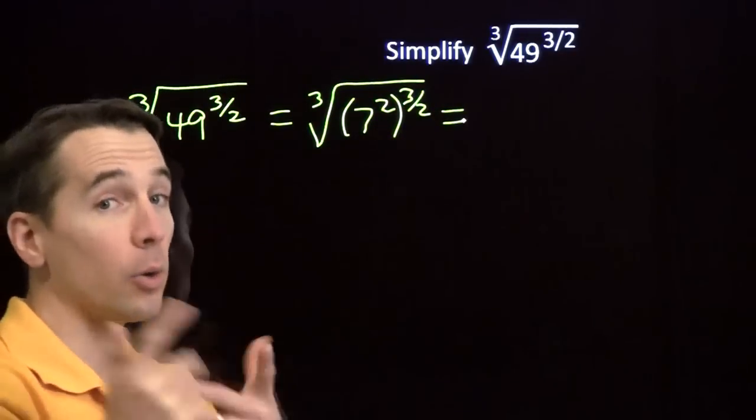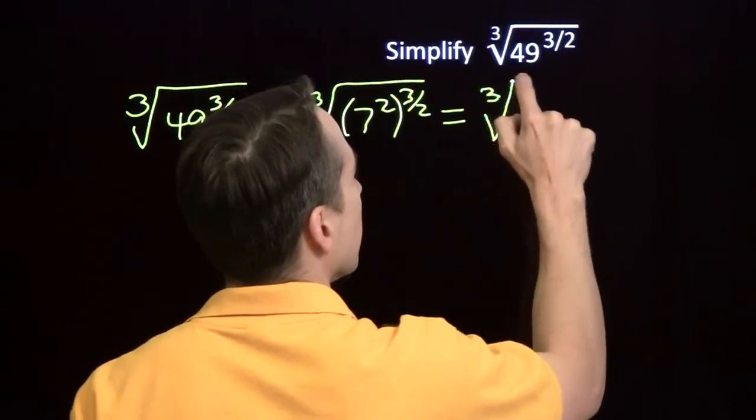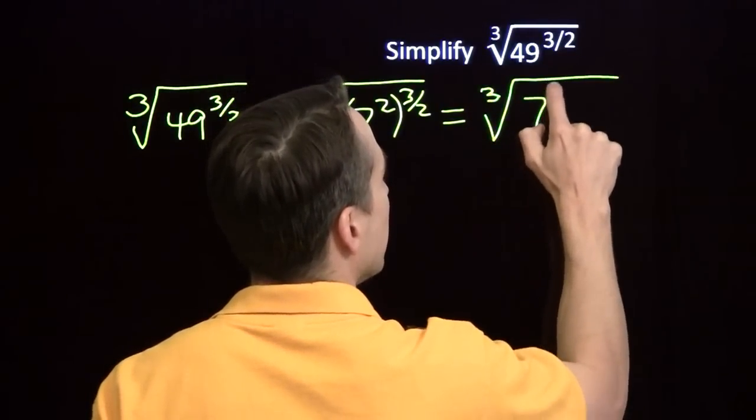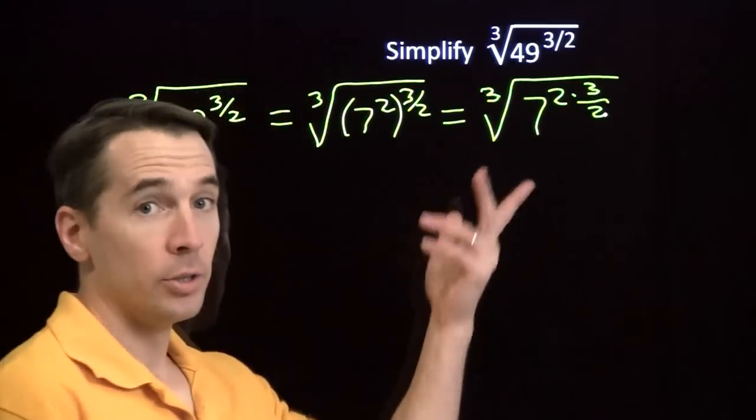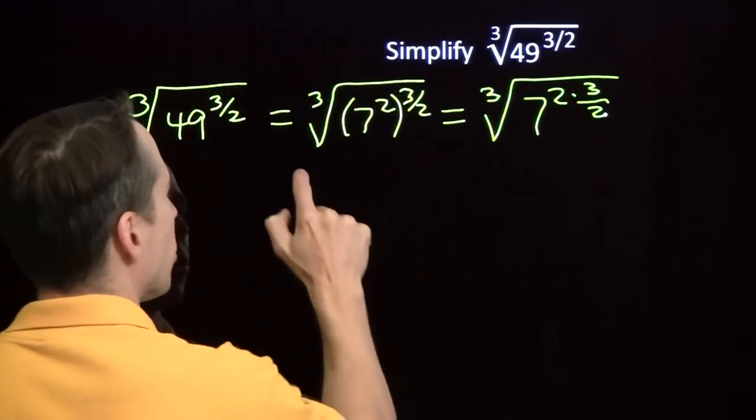Power of a power. We know what to do there. We multiply the exponents. And we have 7 raised to the power 2 times 3 halves. 2 times 3 halves? That's just 3.